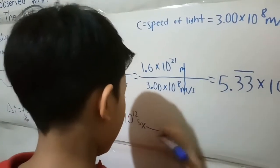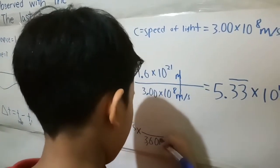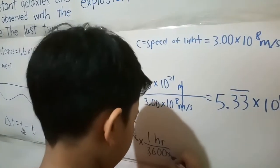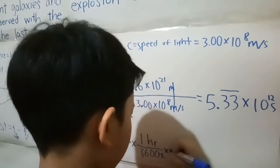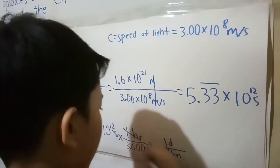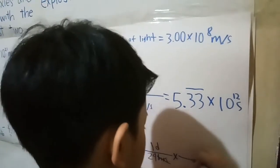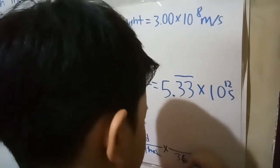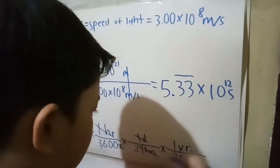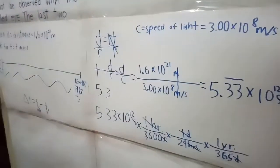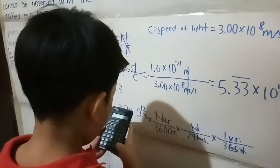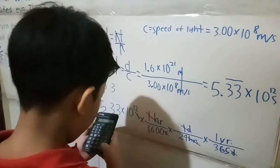There are 3,600 seconds in one hour, so let's cancel the seconds first. There are 24 hours in one day, so cancel the hours. Then there are approximately 365 days in one year, so cancel the days. Divided by 3,600, divided by 24, divided by 365.